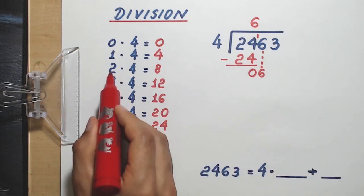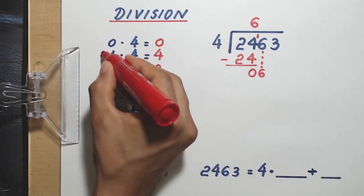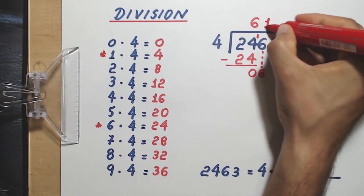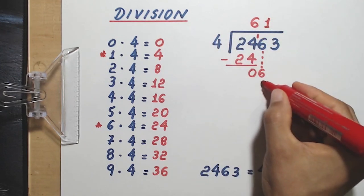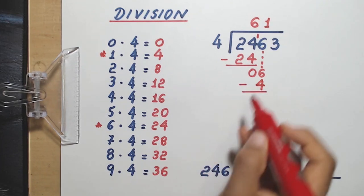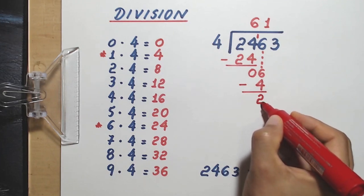If you take a look, 2 times 4 is 8, that is too much, so we go with 1. 1 times 4 is only 4. I write 1 here, 1 times 4 equals 4, I write 4 here, and then we subtract. The subtraction is easy, because 6 take away 4, you get only 2.